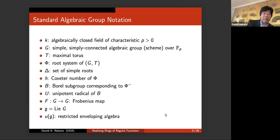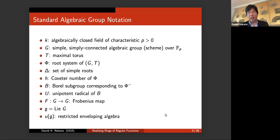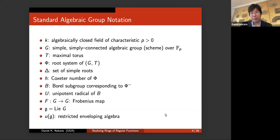We have the Frobenius map, which is quite important — in GL_n it just takes a matrix and raises each entry to the p-th power. Script G will be the Lie algebra, and once we have this restricted Lie algebra, we can form the restricted universal enveloping algebra, which is the quotient of the universal enveloping algebra by an ideal generated by central elements. This quotient is a finite dimensional Hopf algebra that only exists in characteristic p, but it turns out to be a really nice object whose cohomology we can actually compute.